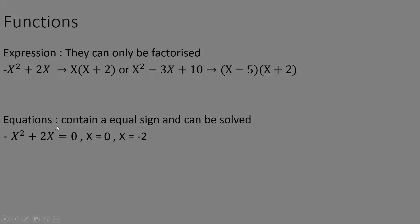An equation, as the name suggests, contains an equal-to sign and can be solved. Here's an example: 2x squared plus 2x equals zero. Factorizing x out, you can solve for x and get x equals zero and x equals negative two.